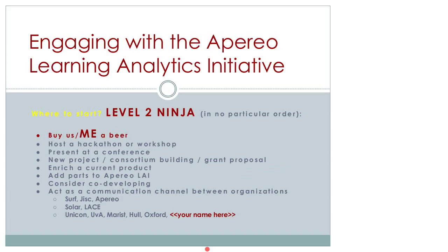Consider co-developing with, for example, Marist College, which has a very good set of predictive models. Take those models to your context and co-develop supporting infrastructure so that you give back and not just take. Consider acting as a communication channel between organizations. I've had contact with a number of organizations — SURF, which is a Dutch body; JISC, a UK body; Aperio, which is international; SOLAR, a researchers' body; LACE, a European evidence hub; UNICON; University of Amsterdam; Marist; Hull; Oxford — and consider how to post information so that we can interact with these different organizations.